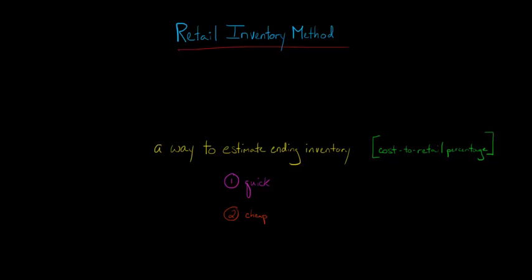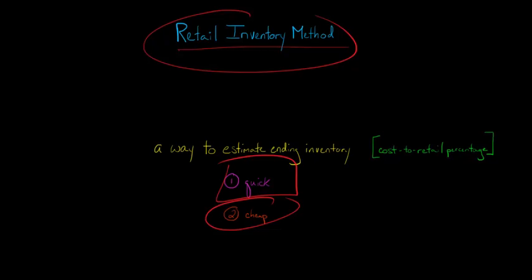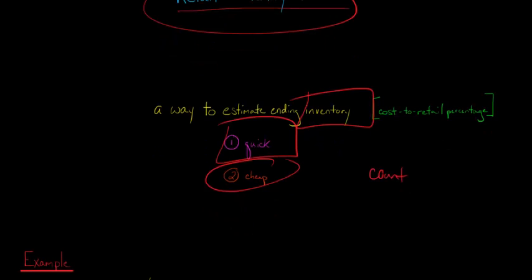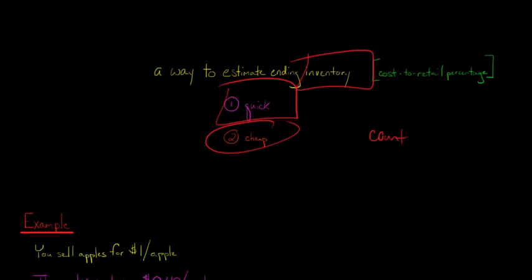So the Retail Inventory Method is a way to estimate the ending inventory for a company. You use something called the Cost to Retail Percentage, which we're going to talk about in a little bit. The reason that people like the Retail Inventory Method is that it's quick and it's cheap. It doesn't cost a lot of money. You don't have to do a physical count of the inventory in order to get an idea of how much inventory that you have on hand.